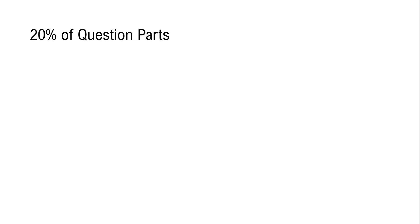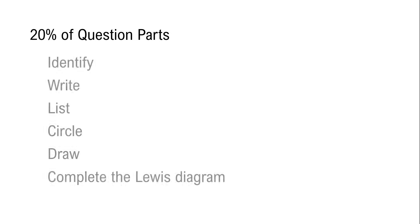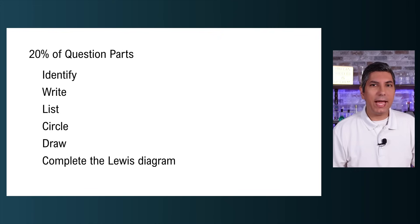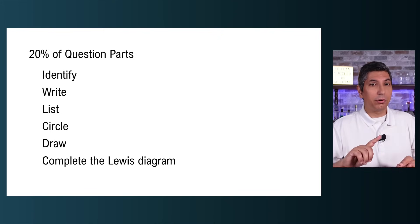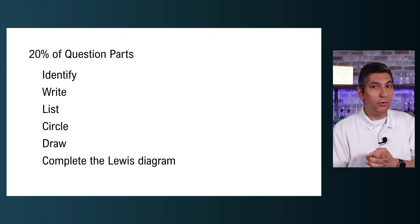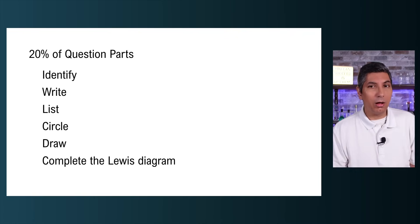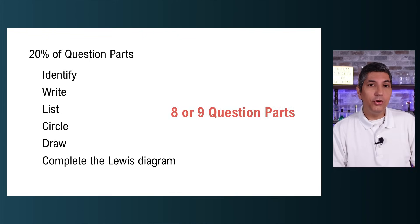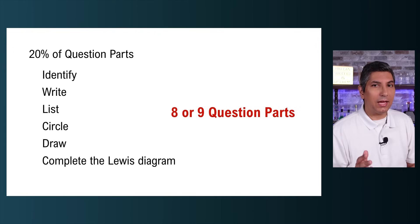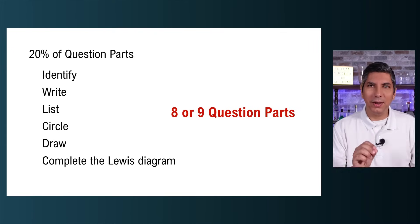About 20% of the free response question parts from the past few years involve these action verbs: identify, write, list, circle, draw, complete a Lewis diagram. For these task verbs you just have to know the answer, provide the information, and move on. There's no reasoning required, no explanation. Just give the answer and if there's any writing at all it might just be a couple of words. Based on the past few years data you can expect to see about eight or nine question parts with these action or task verbs. If you see these words, just give a quick direct answer.